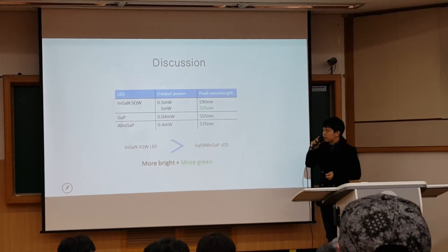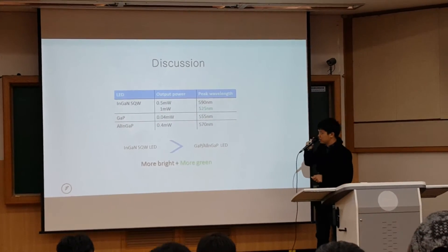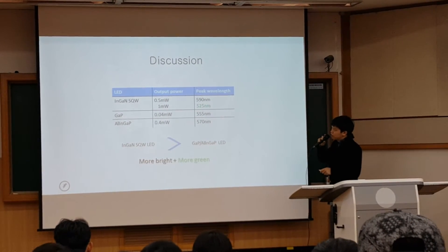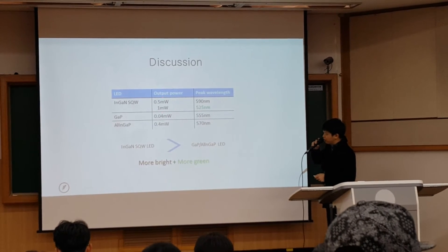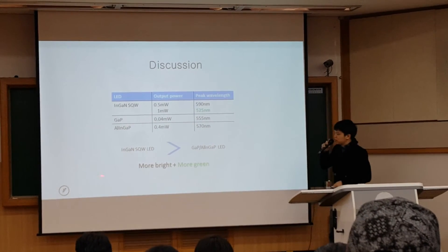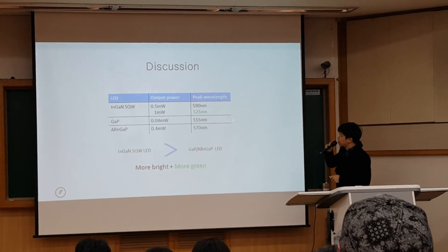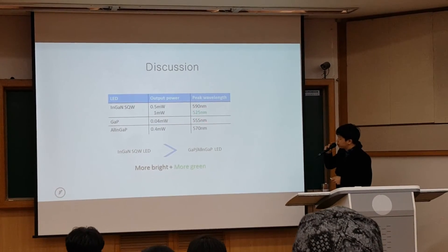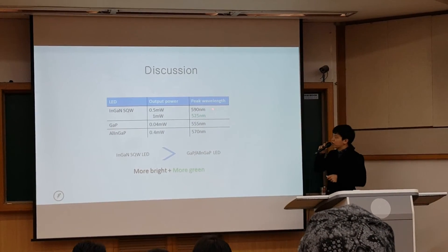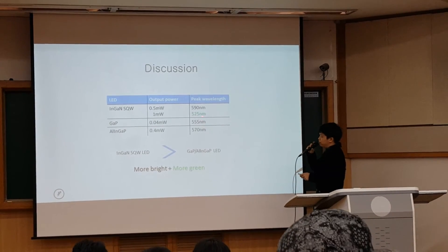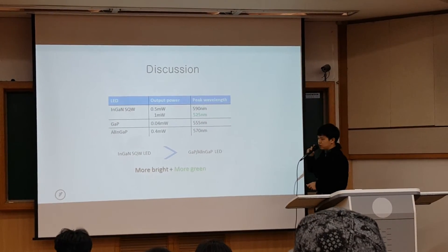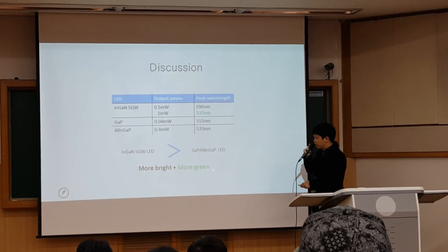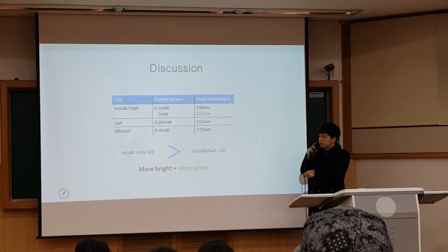Now let's compare newly developed Indium gallium nitride single quantum well LEDs with conventional ones — gallium phosphide and aluminum gallium phosphide. The Indium gallium nitride single quantum well LED has much higher output power, so you can see brighter color. At 525 nanometers, this represents pure green. But 555 and 570 nanometers are not purely green — they are yellowish green. So in conclusion, if you want brighter and more pure green LEDs, use Indium gallium nitride single quantum well LEDs.